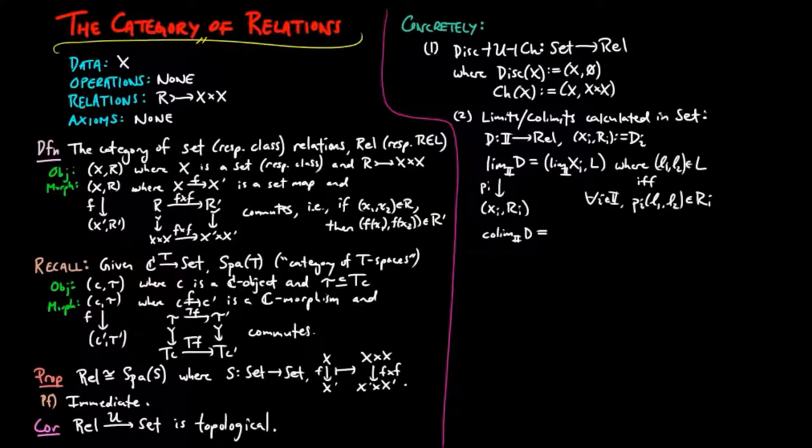The colimit of D is given by colimit on Xi calculated in set K, where (K1, K2) is in K if and only if there exists some i in I such that si(K1, K2) is in Ri, where si is the i-th inclusion map.